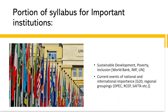Now let's come to important global institutions. The related topics from the syllabus are from the economic portion — sustainable development, poverty, and inclusion — where global agencies like the United Nations, IMF, and World Bank have to be covered. Then there are regional groupings like G20 and OPEC, and trade-related groupings like RCEP and the South Asia Free Trade Agreement (SAPTA), which come under the current affairs portion.